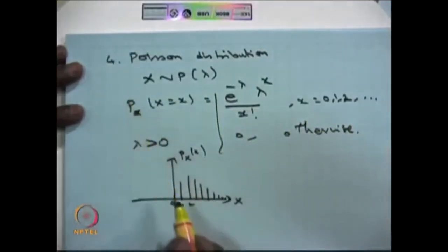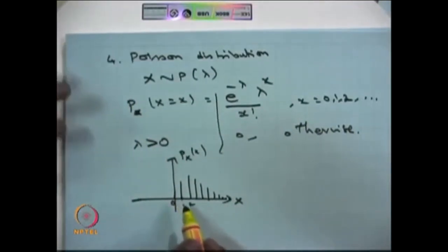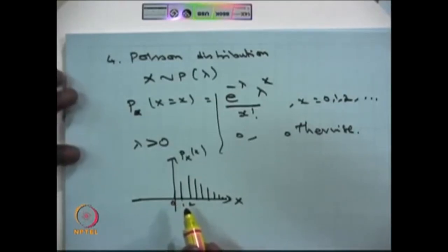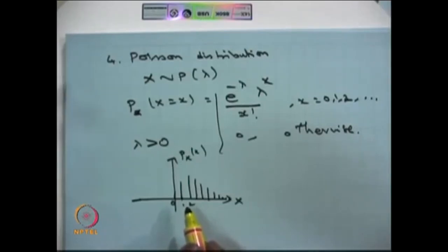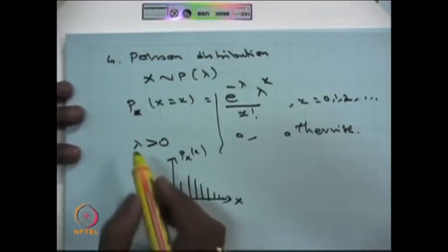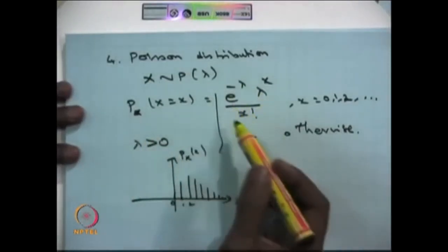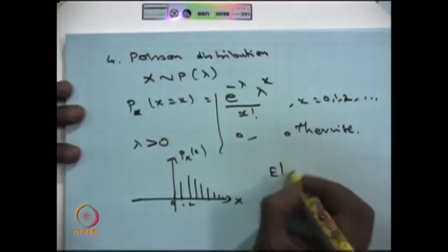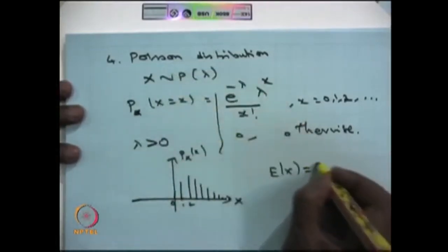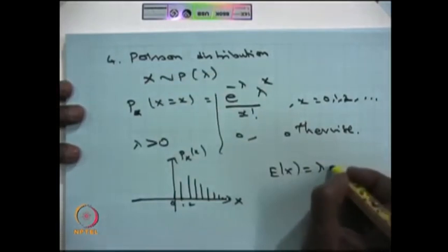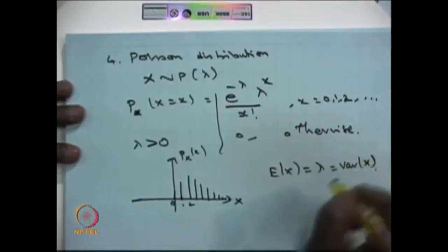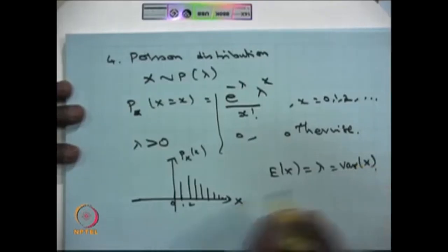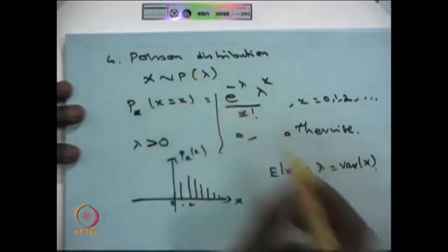This is a very important distribution because it is used to define the Poisson process, a key stochastic process where each random variable is Poisson distributed. For the Poisson distribution, the mean is equal to lambda and the variance is also equal to lambda. So this is one particular distribution in which the mean and variance are both equal to the parameter lambda.